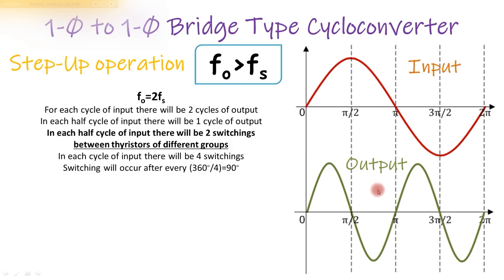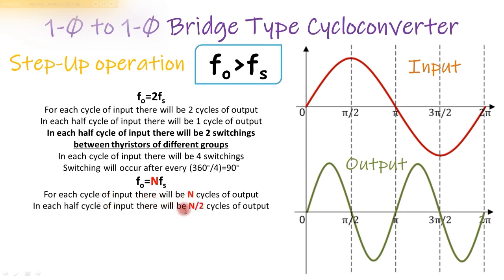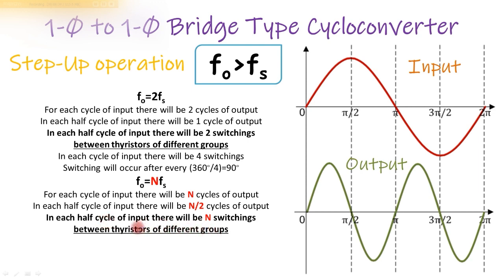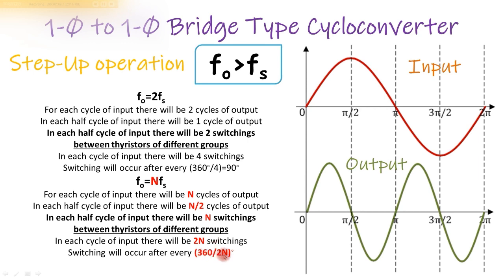Now let us generalize. To obtain output which is N times the supply frequency, there will be N cycles of output for each cycle of input and N/2 cycles in each half cycle. There will be N switchings in each half cycle between different thyristor groups, and 2N switchings in each complete cycle. Therefore switching will occur after every 360 divided by 2N degrees.